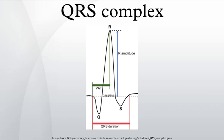A Q wave is any downward deflection after the P wave. An R wave follows as an upward deflection, and the S wave is any downward deflection after the R wave. The T wave follows the S wave, and in some cases an additional U wave follows the T wave.